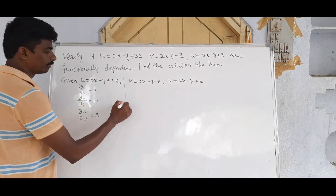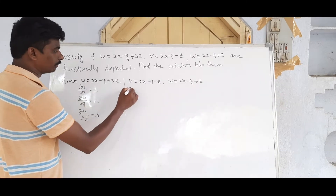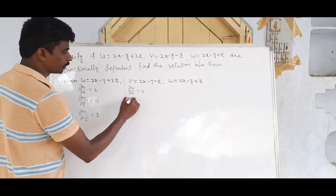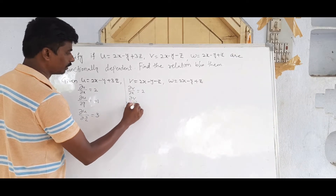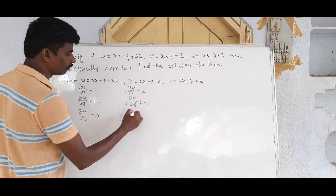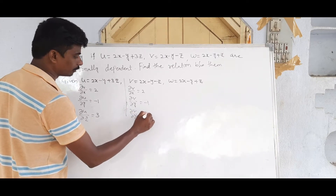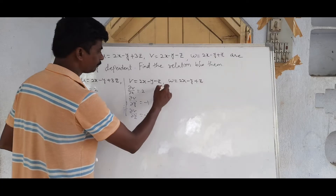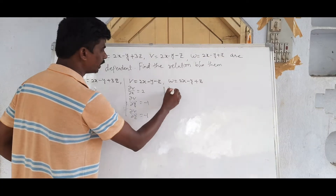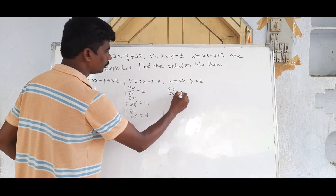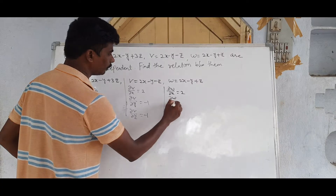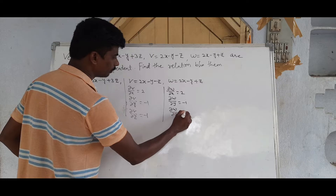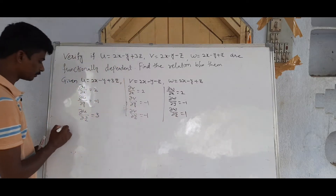The partial derivatives are: ∂u/∂x = 2, ∂u/∂y = −1, ∂u/∂z = 3; ∂v/∂x = 2, ∂v/∂y = −1, ∂v/∂z = −1; ∂w/∂x = 2, ∂w/∂y = −1, ∂w/∂z = 1.